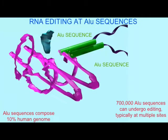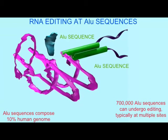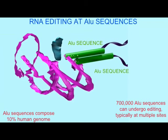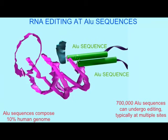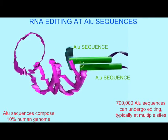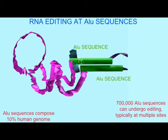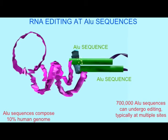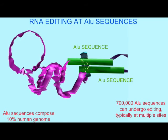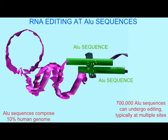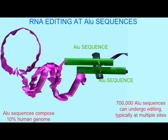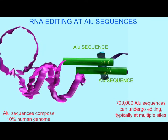There seem to be 700,000 ALU sequences which can undergo RNA editing. If a sequence of RNA possesses two ALU sequences within 3,500 nucleotides of each other in an inverted orientation, this encourages RNA editing. Apparently this is one of the major targets of RNA editing in humans.